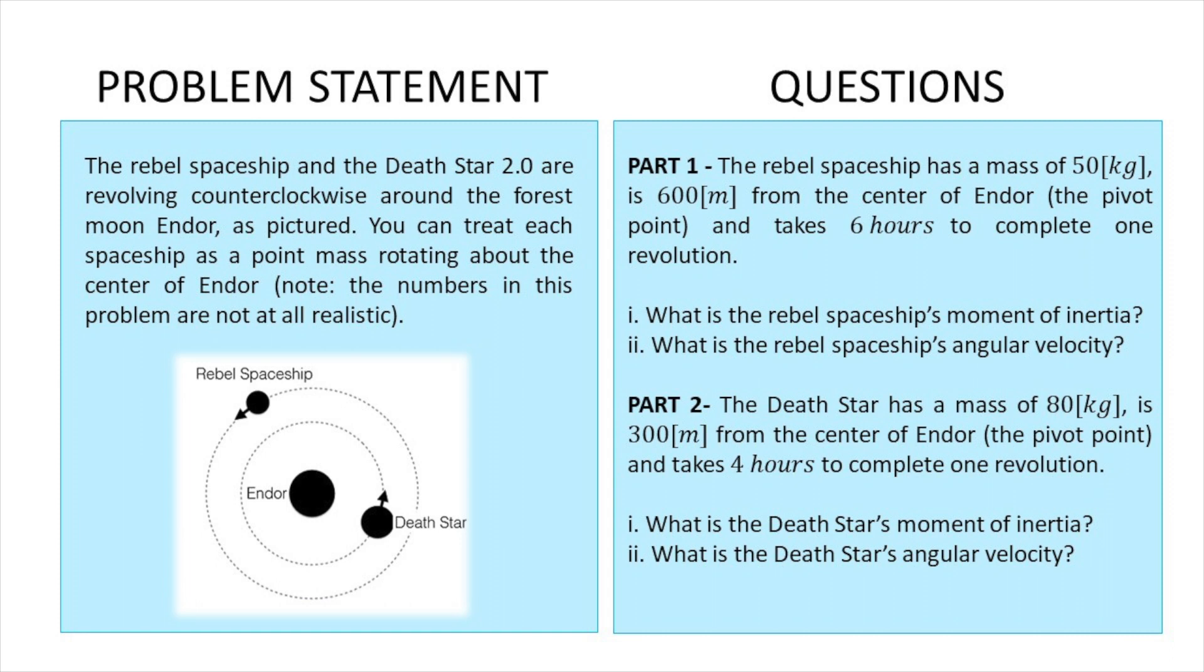So here's the problem. Feel free to pause the video in order to copy the problem. The Rebel spaceship and the Death Star 2.0 are revolving counterclockwise around the forest moon Endor as pictured. You can treat each spaceship as point mass rotating around the center of Endor.